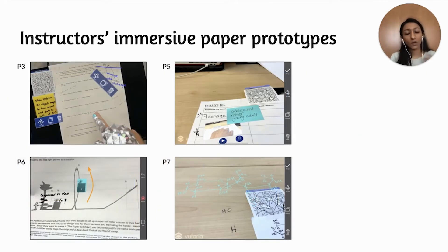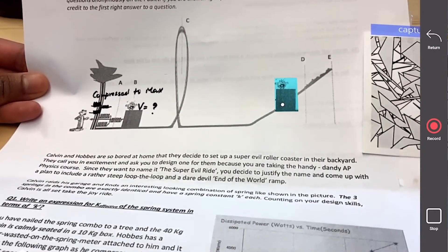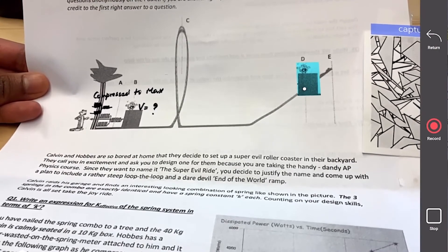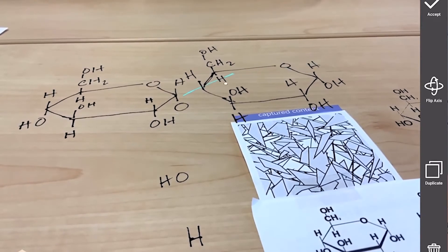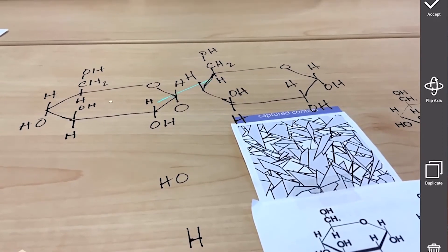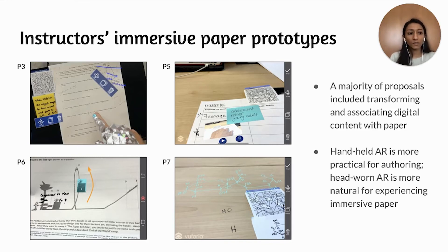The instructors prototyped a wide range of interactions to enhance their own teaching materials. A physics instructor prototyped a problem set using AR to simulate how a roller coaster cart is affected by different forces like spring force and friction. Another instructor adopted a macromolecule building activity where students can directly manipulate and break off molecules to form new carbohydrates. We found that a majority of proposals involved transforming or associating digital content with paper, and a majority of instructors chose to prototype using handheld AR, which they found more practical and efficient for authoring.